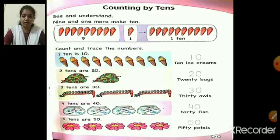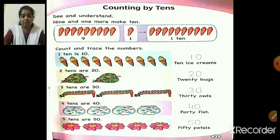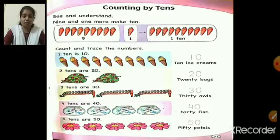Look at the next one — four 10s are 40. Four 10s because we can see four jars, and in those jars we have fishes — 10 fishes in each jar. So if you add 10 four times, the answer you get is 40. So four 10s are 40 — trace 40.